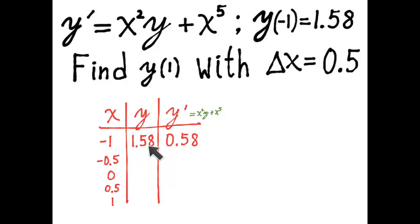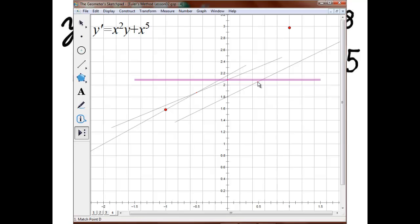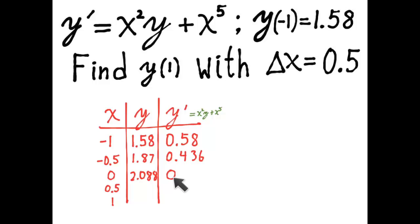To compute the next y value — this is really the heart of the matter — I take the previous value of y and add delta x times y prime. So I add delta x, which is one-half, times 0.58, which gives 0.29, and I add that to 1.58. Then I have a new x and y so I use the differential equation again to find the new y prime, multiply by step size 0.5, and add to y. When x equals 0, the new y prime is 0, so adding 0.5 times 0 gives the same y value. I compute the next y prime and then the final y value.